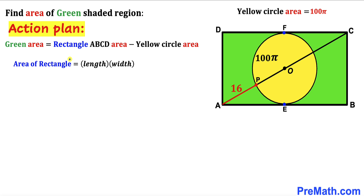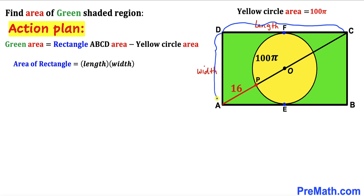Let's recall the area of a rectangle formula: area equals length times width. Here our length is CD and our width is AD, so our task is to calculate this length and width.